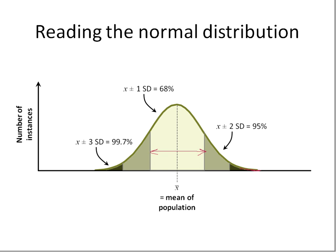If we go two standard deviations away, we're going to get 95% of the population — which corresponds to the p-value of less than 0.05, roughly a 5% probability. And plus or minus three standard deviations is pretty much everybody: 99% of results will be within three standard deviations.